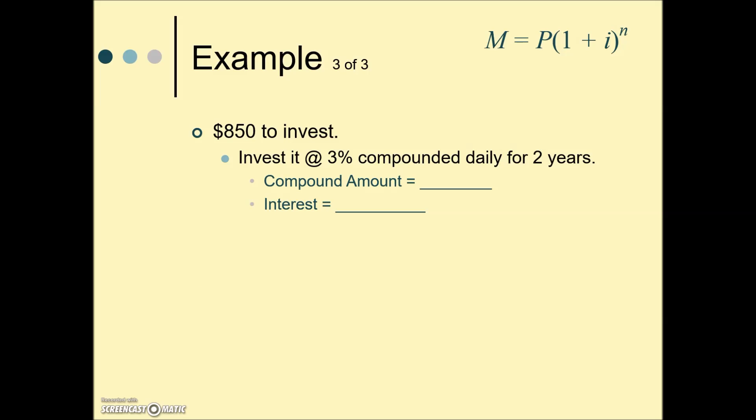In this next example, we have $850 to invest at 3% compounded daily for two years, and they're asking us for the compound amount and interest. We need to first find what i is, the interest per compounding period. We'll take 3% divided by 365. Now this is going to be a small number and it's best just to leave that calculation for within the formula. We also need to know what n is, and this is a good thing to calculate. Our time is 2 years, compounded daily means 365 times per year. We'll multiply that for 730.